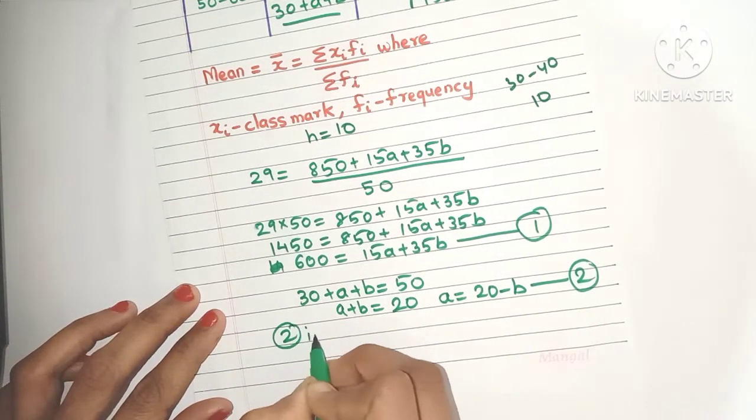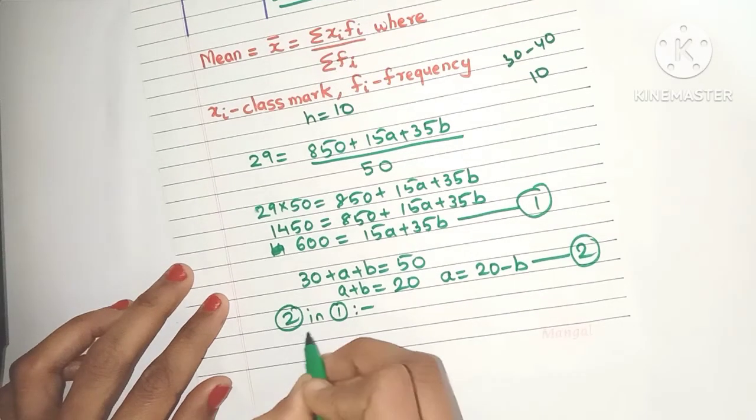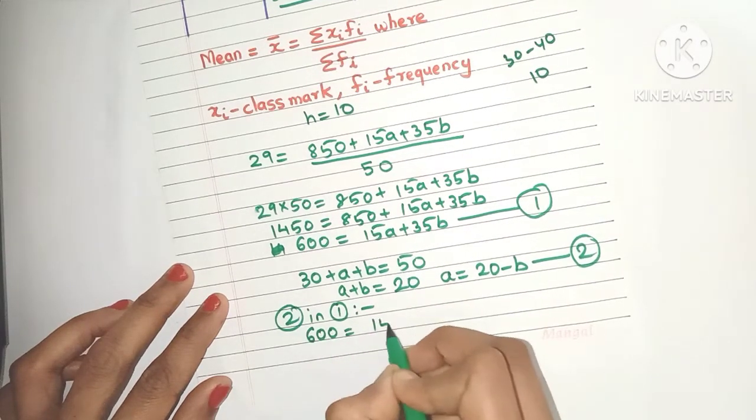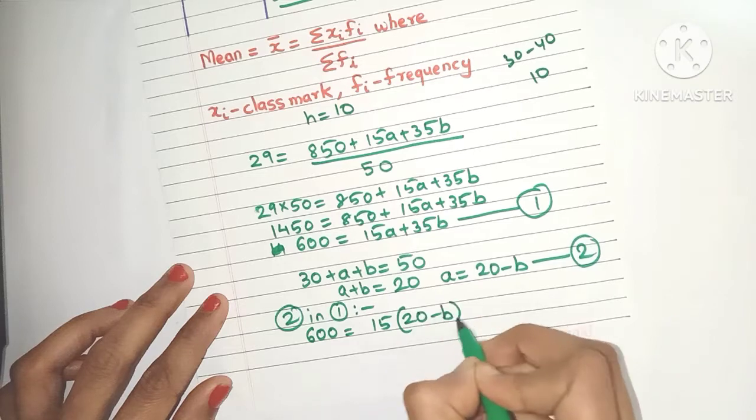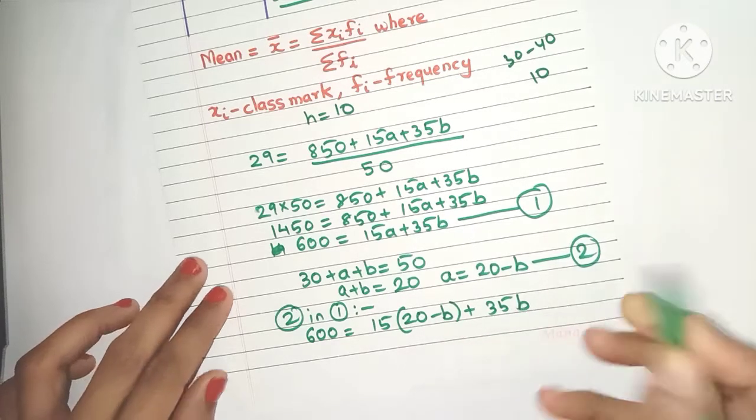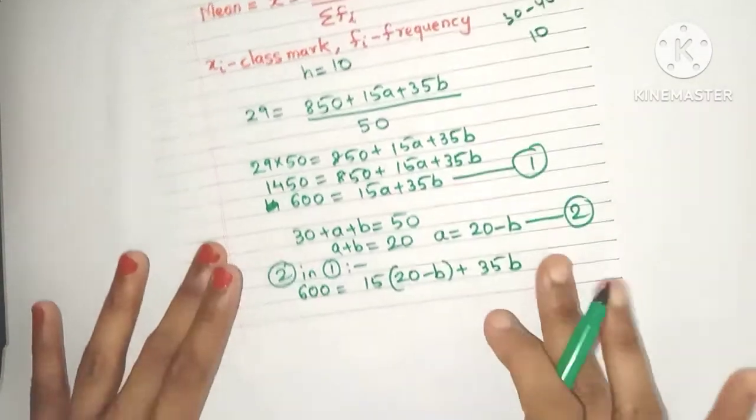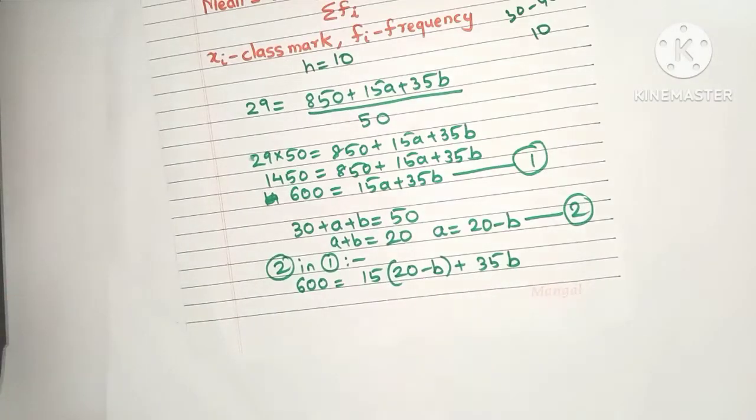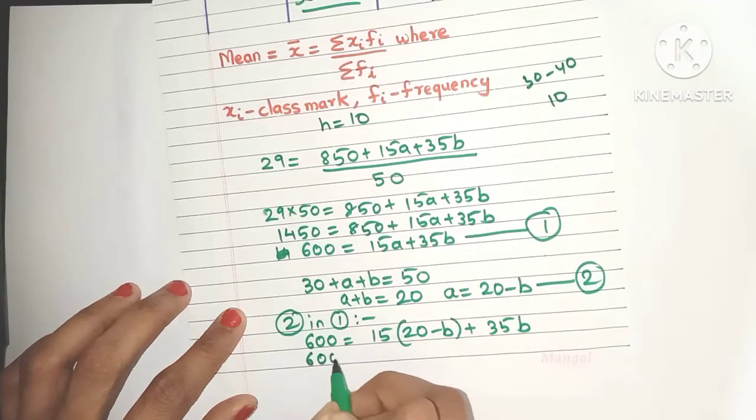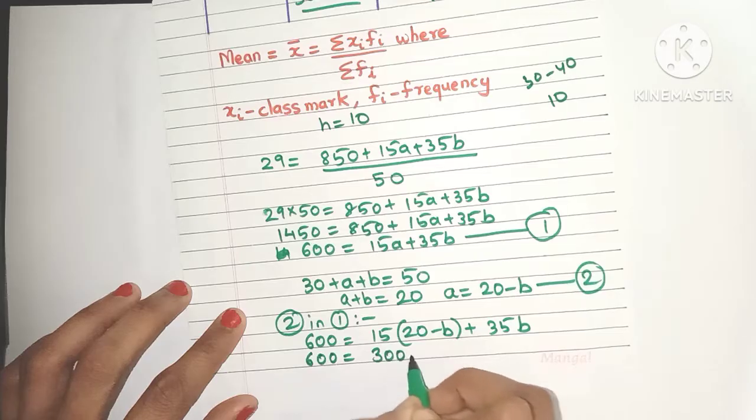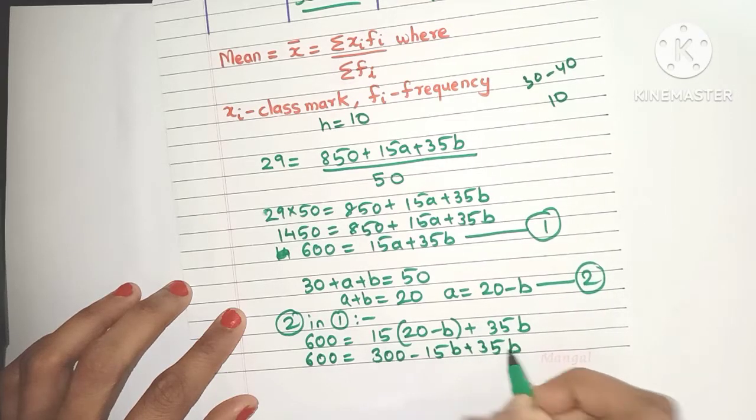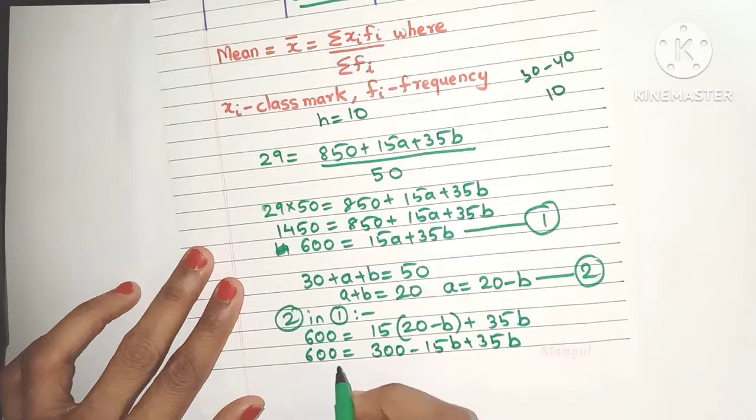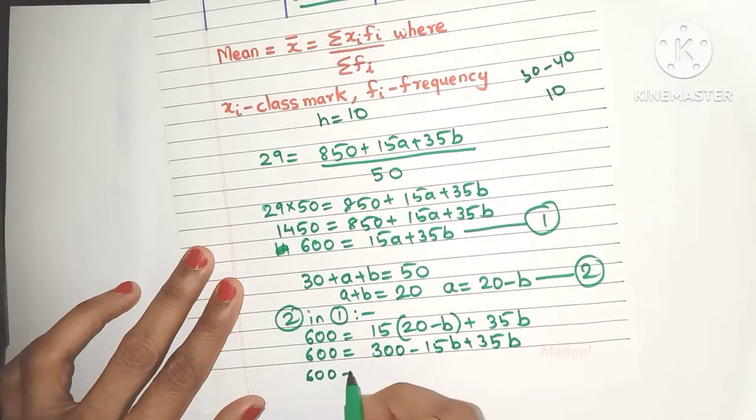Let's substitute equation 2 into equation 1. We'll get 600 equals 15 times (instead of a, I'm going to write 20 minus b) plus 35b. Now it's very easy, we have only one variable. Let's open up this bracket. We'll get 300 minus 15b. Let me bring the 300 to the other side.